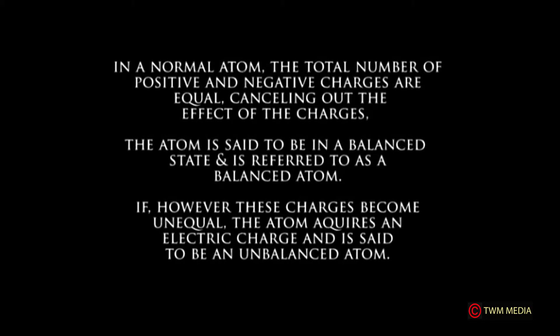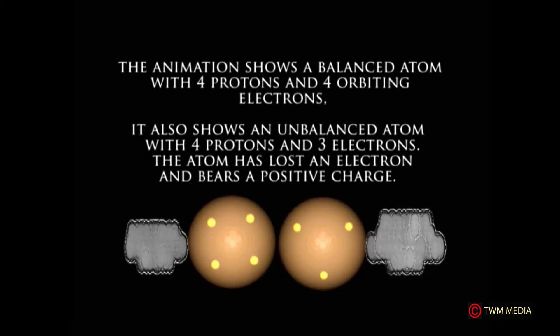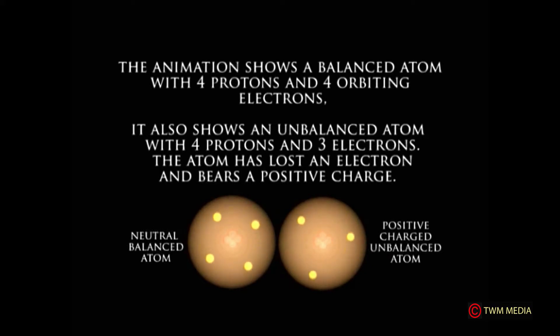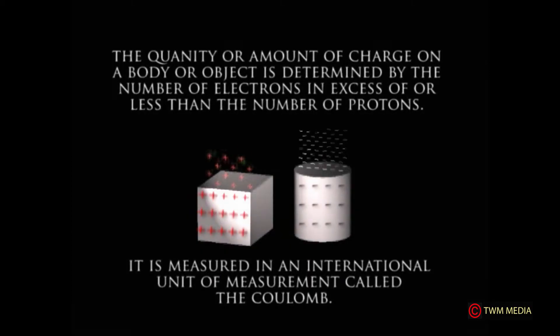The atom is said to be in a balanced state and is referred to as a balanced atom. If these charges become unequal, the atom acquires an electric charge and is said to be an unbalanced atom. The animations show a balanced atom with four protons and four orbiting electrons, and an unbalanced atom with four protons and three electrons — the atom has lost an electron and bears a positive charge.